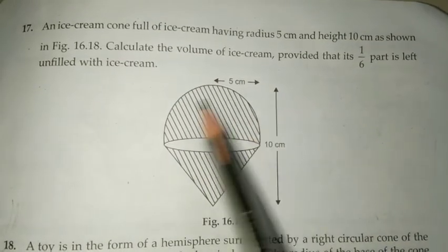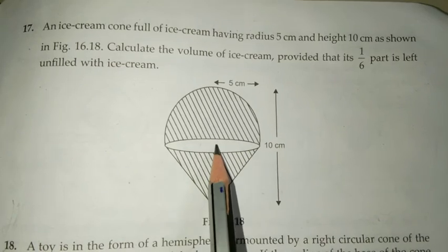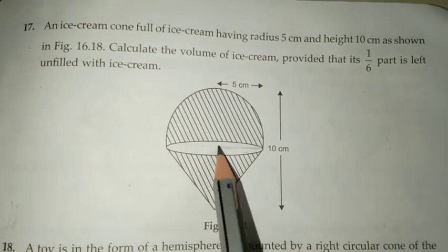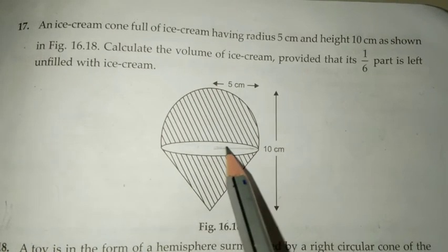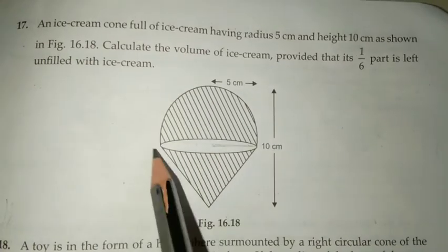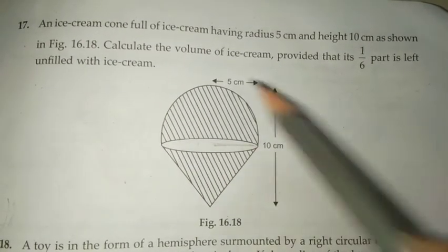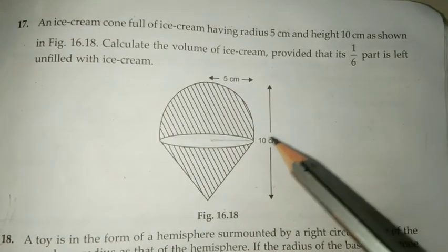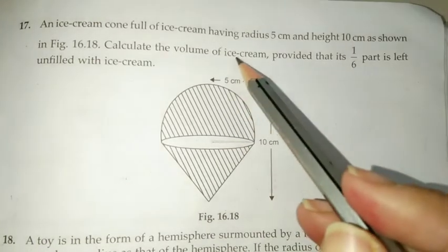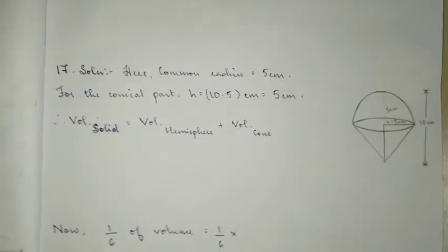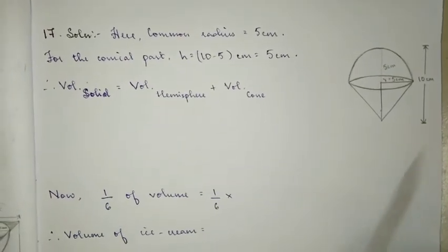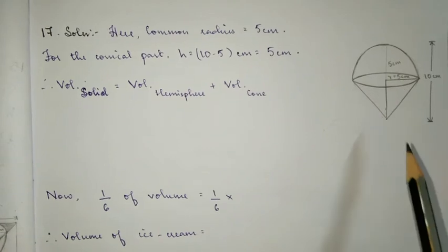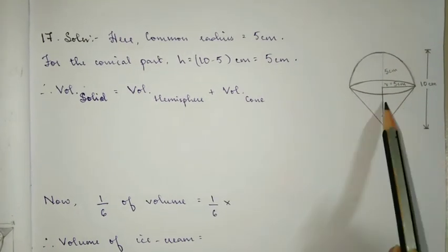Next, question number 17. You can see it's an ice cream cone — a cone with a hemisphere on top. They share a common radius. The conical part has a given radius and height. We need to find the volume of the ice cream cone, which is the volume of the cone plus the volume of the hemisphere.